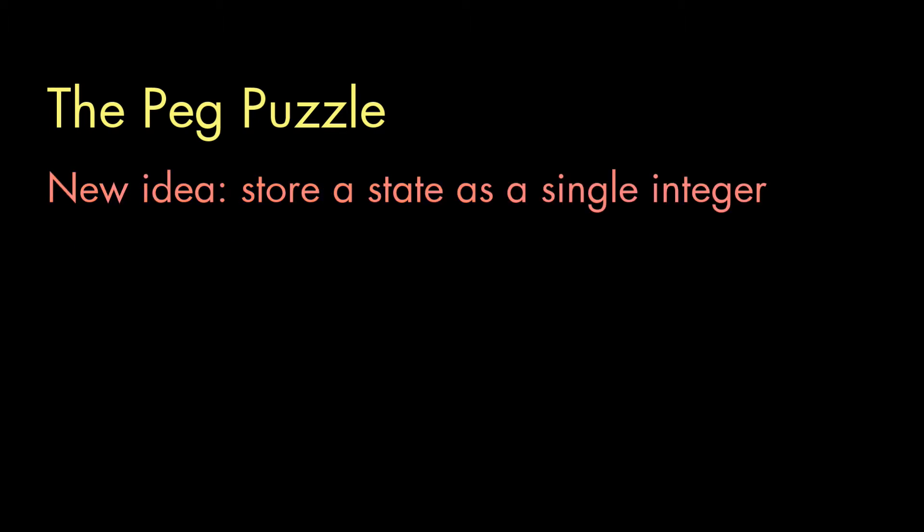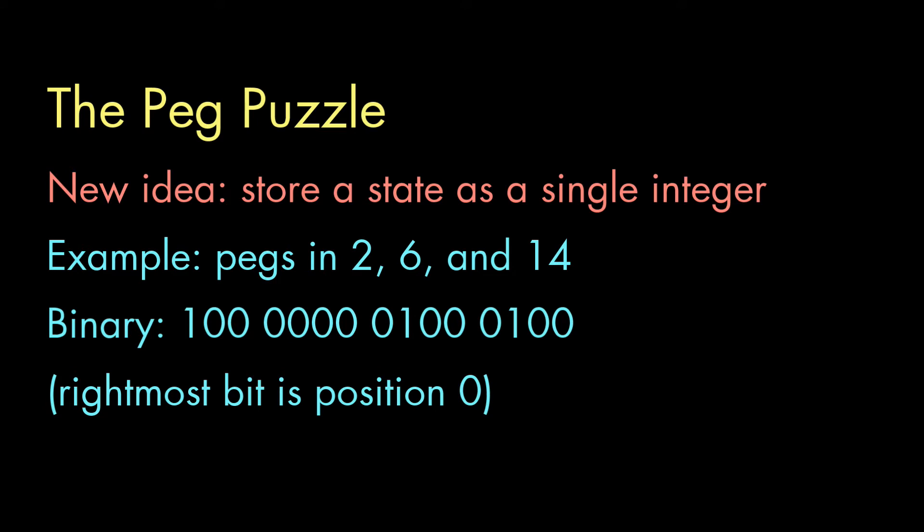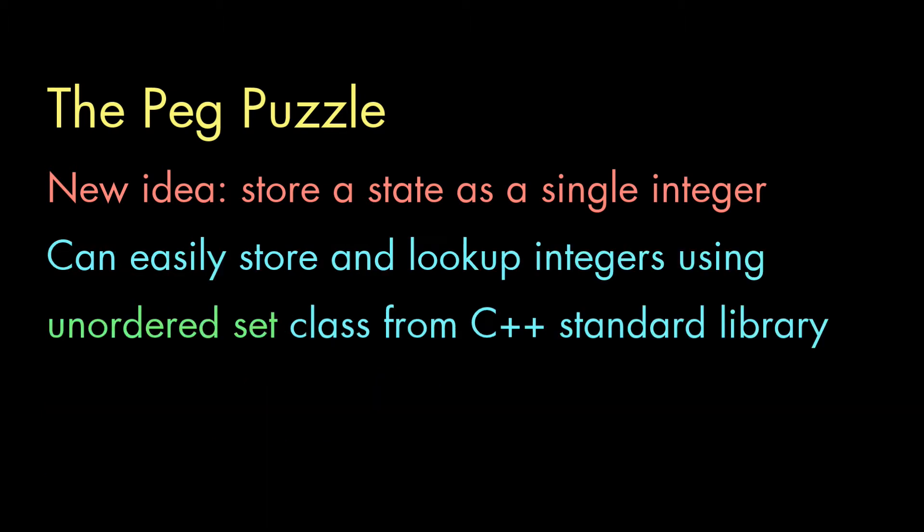So, what I think I'm going to do is store a game state as a simple integer. The idea is that the binary representation of the number will indicate which positions have pegs. So, for example, if there are pegs remaining in positions 2, 6, and 14, those bit positions will be 1, and all others will be 0. The binary number will be as shown, which is decimal 16,452. I can quickly store and look up simple integers using the unordered set class in the C++ standard library.